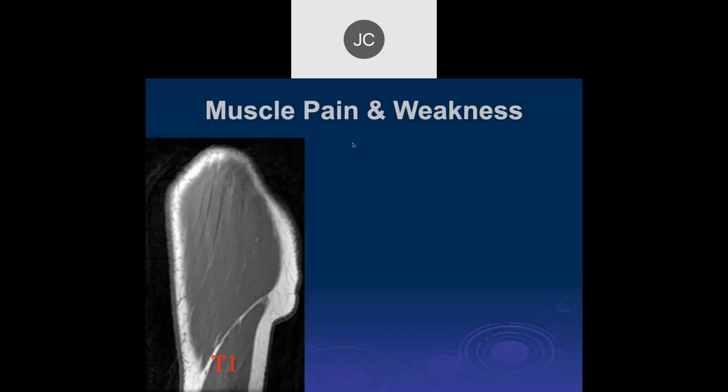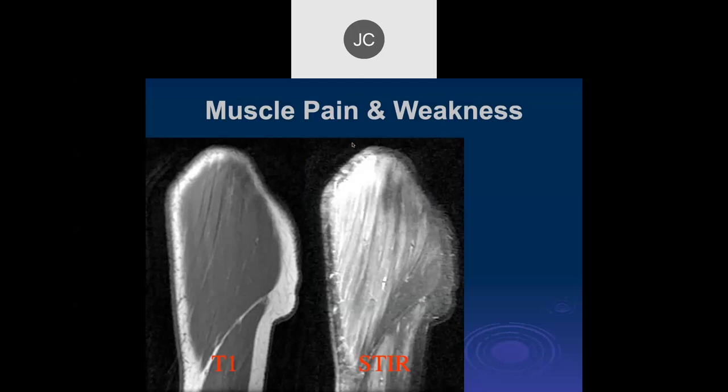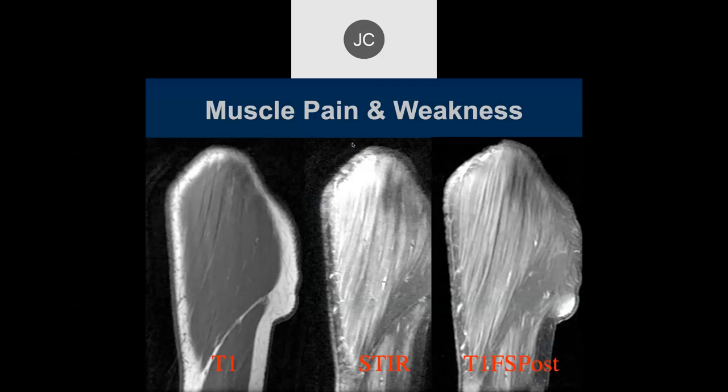We'll continue with inflammatory disease and other diseases around the shoulder. This looks like a shoulder — on T1 it doesn't look too impressive. There's diffuse, linear edema throughout the muscle along its length, and then on the T1 fat-sat post there's enhancement and edema throughout. What's your first question?